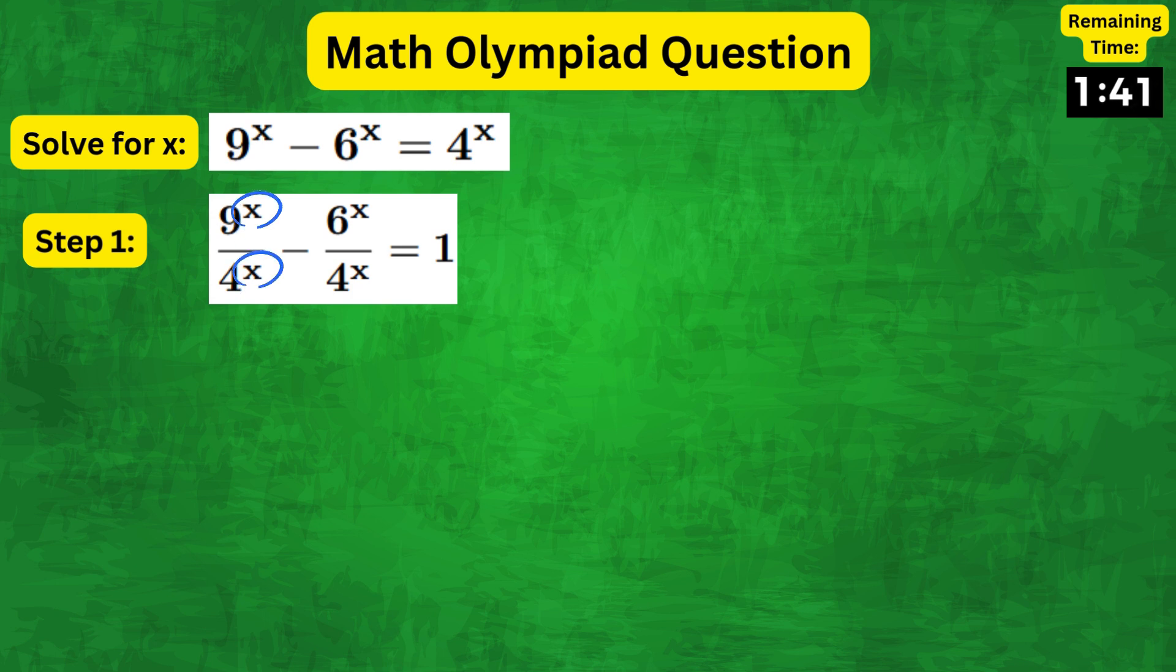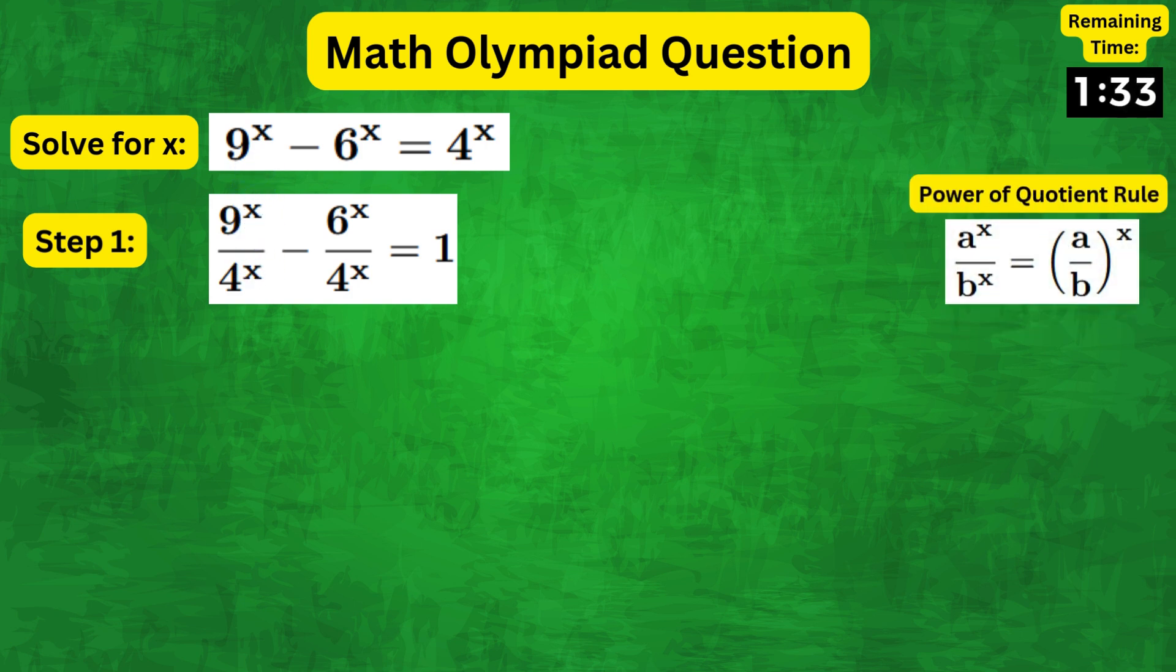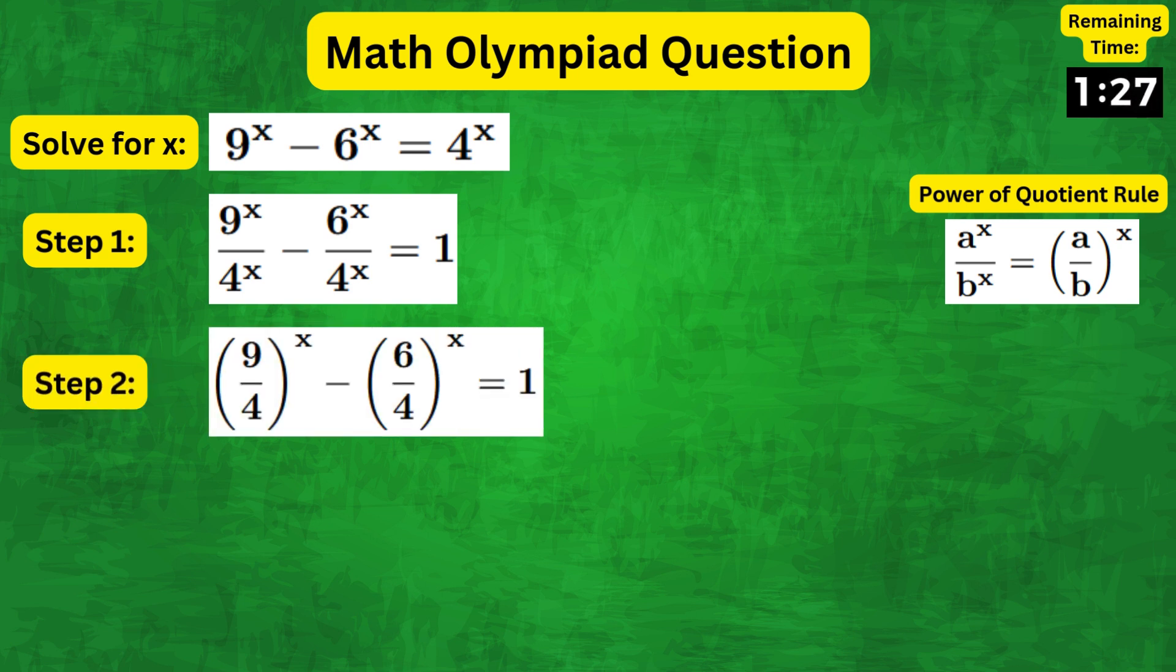Now notice that we have the same x in the power of the numerator and the denominator of both fractions. So we can use the rule a to the x over b to the x equals a over b whole to the power of x to rewrite the problem as 9 over 4 whole to the x minus 6 over 4 to the x equals 1.